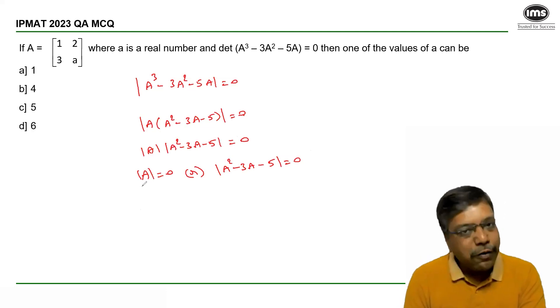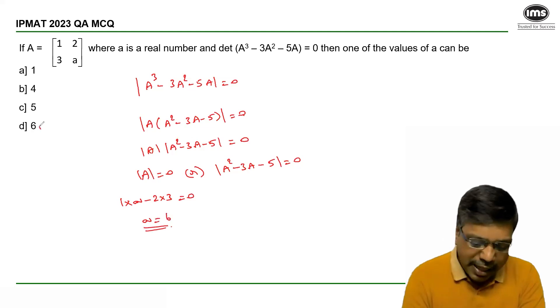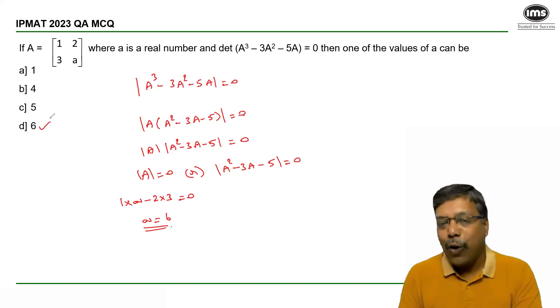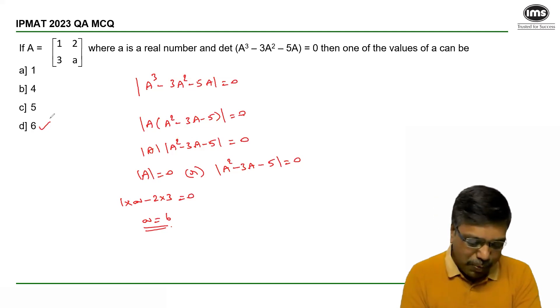If I consider the first case, determinant A, it is 1 into a minus 2 into 3 is equal to 0, which gives the value of a to be 6, answer option D.